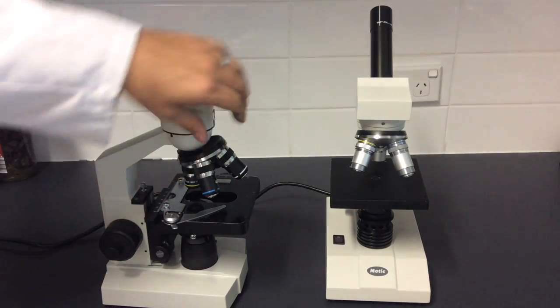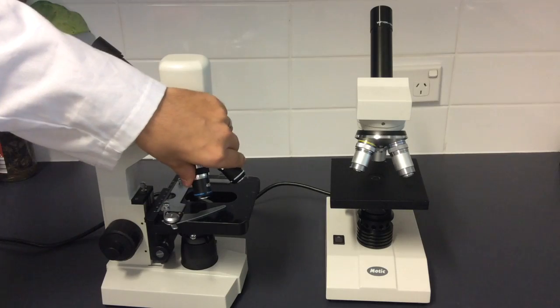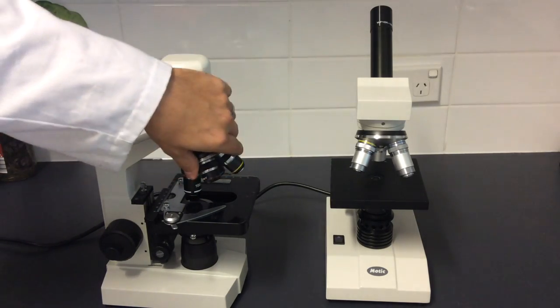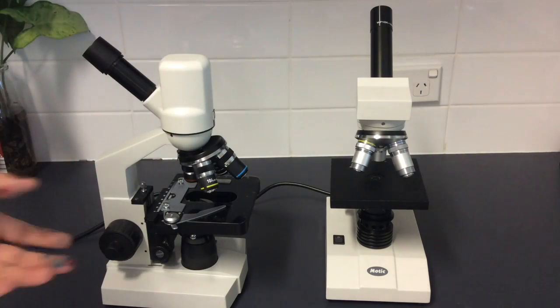So you've got three and then there is the revolving nose piece here. Okay, so they revolve around like that. Make sure you revolve around from the top, not holding actual objective lenses.